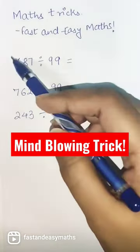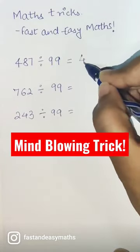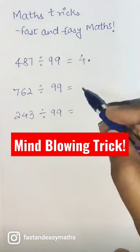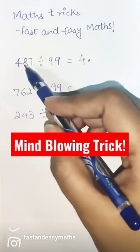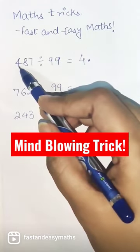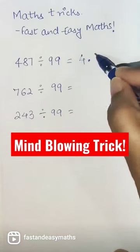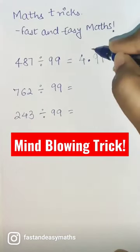All you have to do is whatever is the first digit, you write it over here and then put a point. And then over here the two digits would be nothing but 87 add 4 to it. So 87 plus 4 you get 91, and then you put a bar.